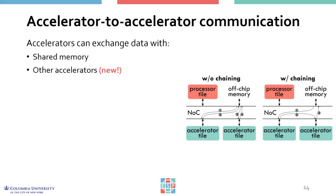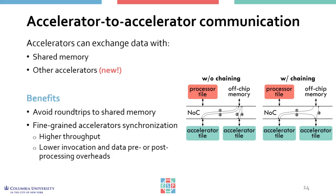Normally, accelerators exchange data with the memory hierarchy, communicating directly with off-chip memory. With this work, we added hardware and software support for accelerator-to-accelerator communication. This is especially useful to dynamically create accelerator pipelines by chaining them. The main benefit is to avoid round trips to shared memory. Additionally, our solution inherently provides fine-grained synchronization between accelerators without the need for any intervention from the CPUs.